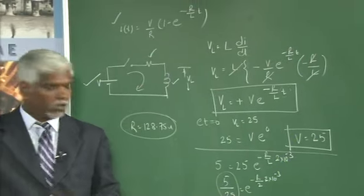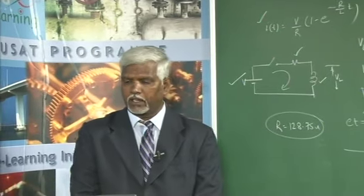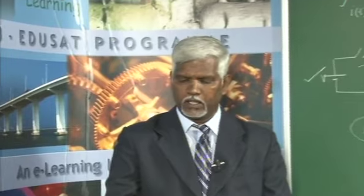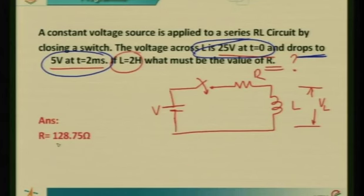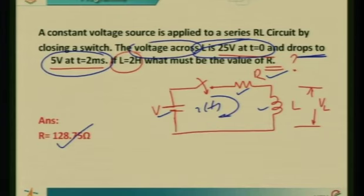The key insight is identifying which equation to use. The voltage across the inductor VL = V·e^(-R/L × t) is the relevant expression. From the two conditions given (VL at t=0 and at t=2 ms), we extract V and then solve for R using the natural logarithm.